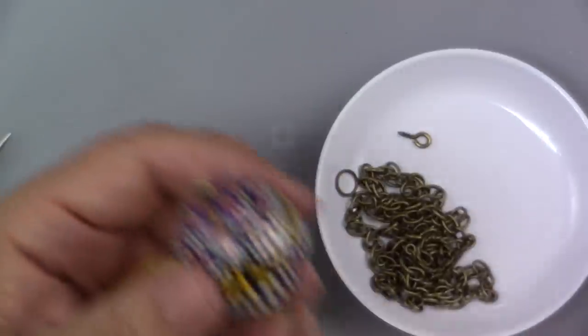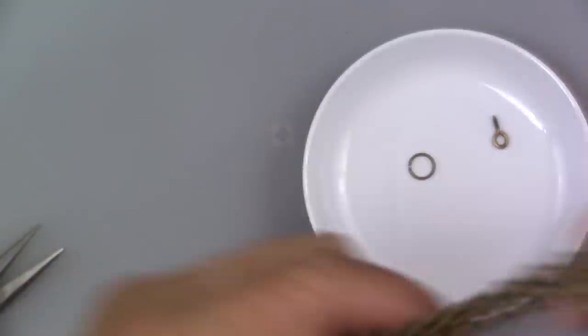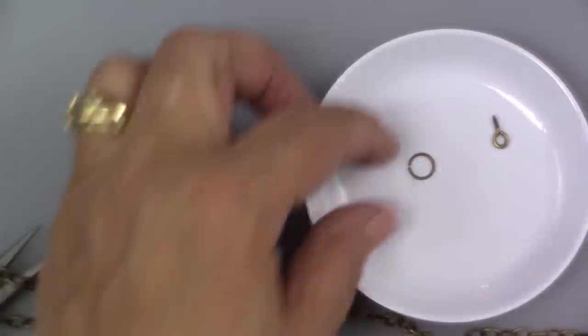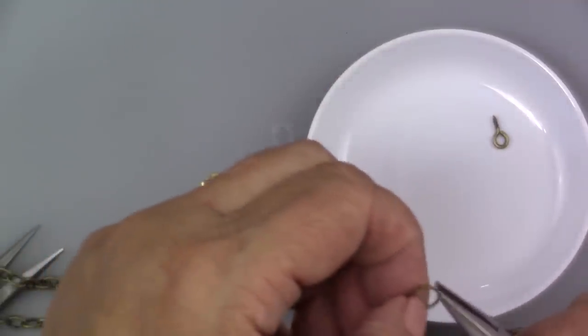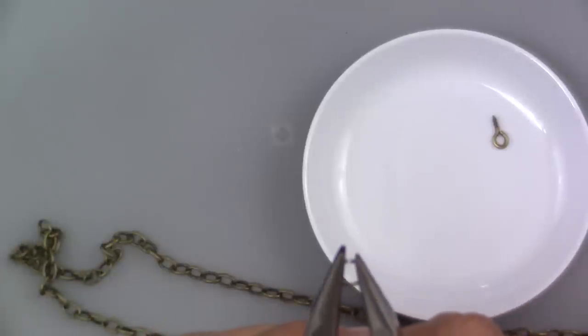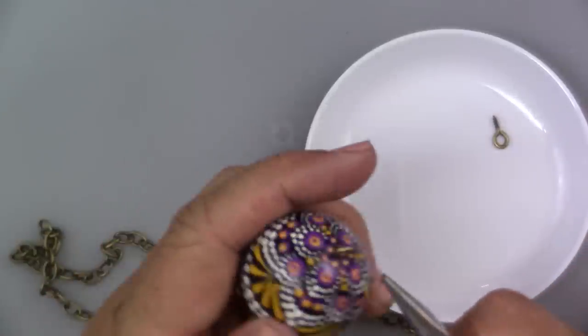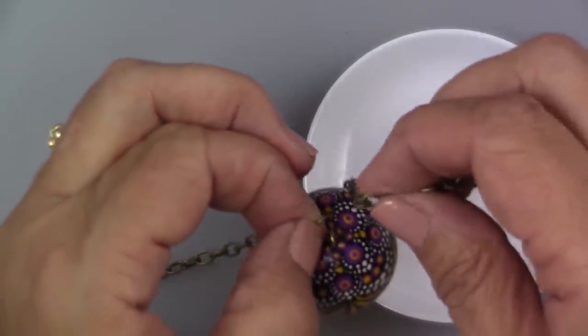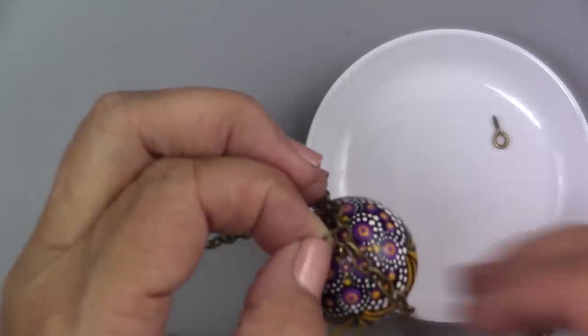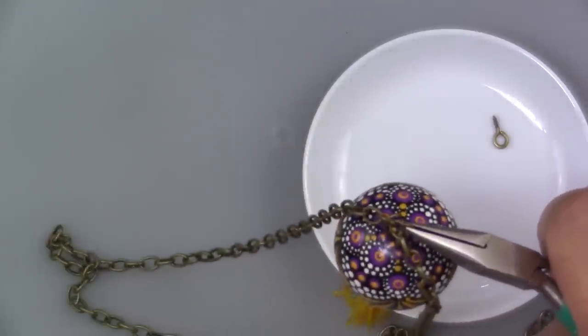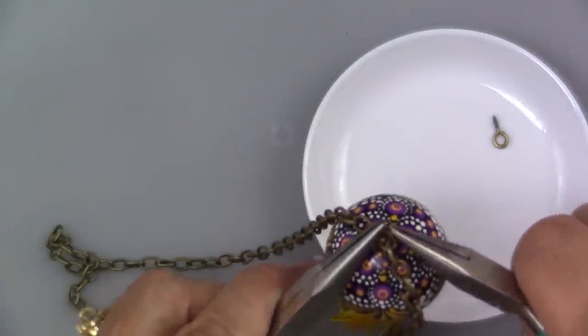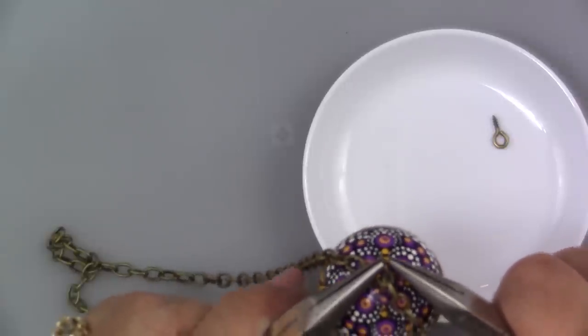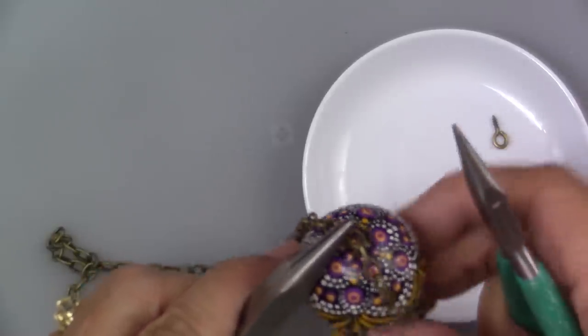Now let's do the top, the necklace. I'm going to go ahead and open this jump ring. I'm just going to make sure my jump ring goes through. Now I'm going to go ahead and put my chain on because I put the clasp on. I wouldn't be able to get it through otherwise. So just go ahead and drop that in and close up that jump ring. Make sure that's nice and tight. And there's the finished piece.